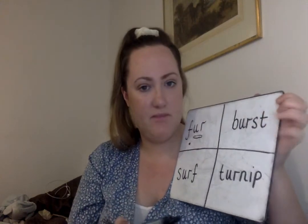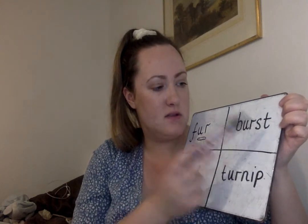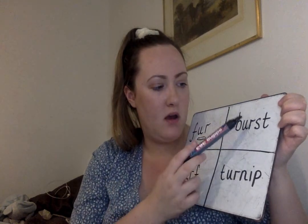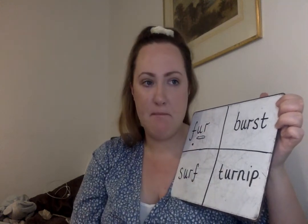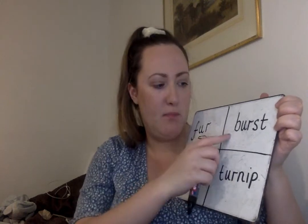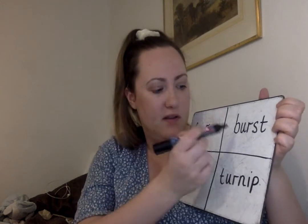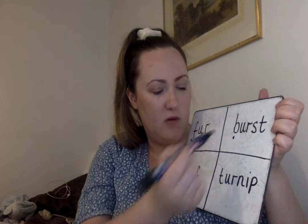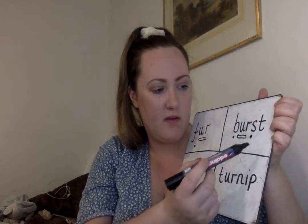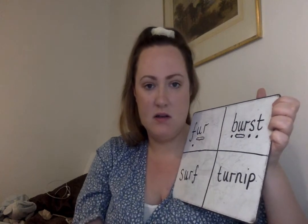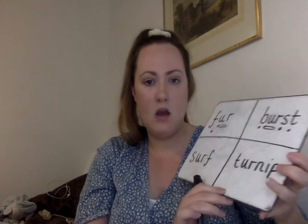Okay, let's have a look at the next one. We've got B-U-R-S-T. B-U-R-S-T makes 'burst.' Let's have a go at doing the sound buttons. We've got a bean for B, a sausage for U-R, a bean for S, and a bean for T. B-U-R-S-T, burst.